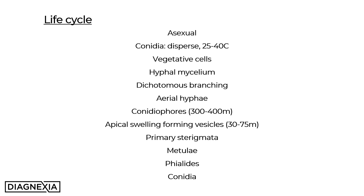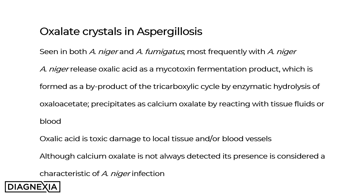The vesicles then develop primary sterigmata, which give rise to the metulae. The metulae then bear phylides, and at the ends of the phylides are the conidia. Another characteristic feature is the presence of oxalate crystals in aspergillosis. Oxalate crystals are seen in both Aspergillus niger and Aspergillus fumigatus, but are most frequently seen in Aspergillus niger infections. Aspergillus niger releases oxalic acid as a fermentation product or mycotoxin, formed as a by-product of the tricarboxylic cycle by enzymatic hydrolysis of oxaloacetate.